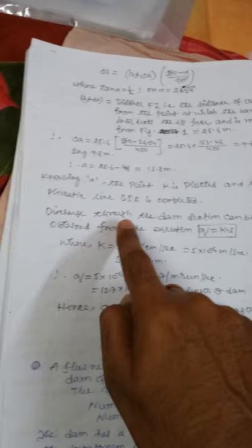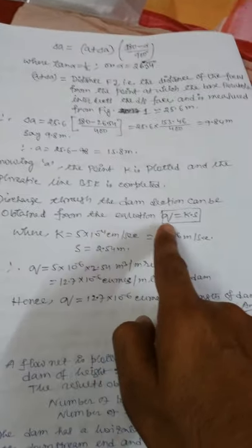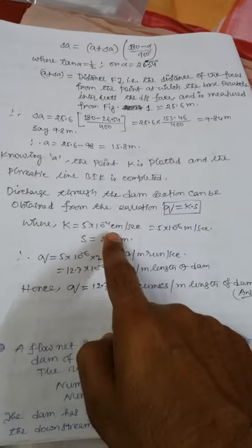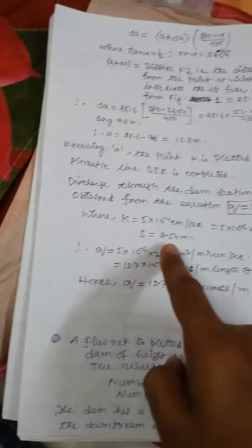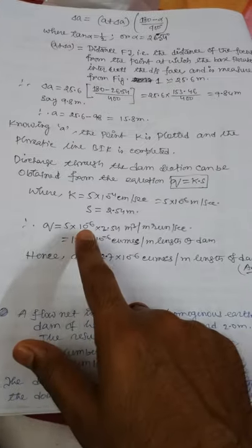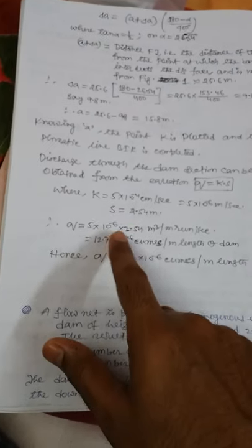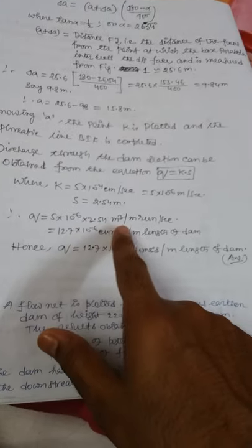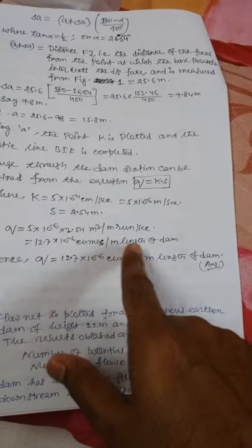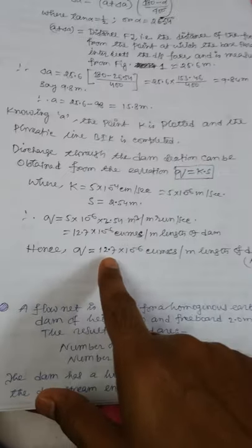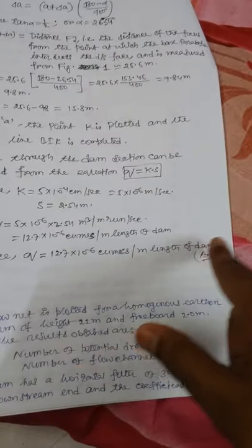Discharge through the dam section can be obtained from the equation Q equals k times a, k equals 5 into 10 to the minus 6 meter per second, and hence Q equals 12.7 into 10 to the minus 6 cubic meter per meter length of the dam.